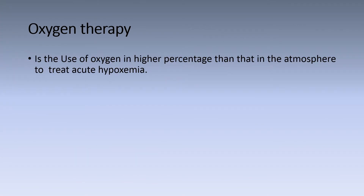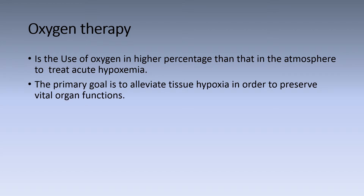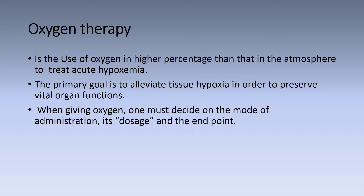Oxygen therapy is the use of oxygen in a higher percentage than that in the atmosphere to treat acute hypoxemia. The primary goal is to elevate tissue hypoxia in order to preserve vital organ functions. When giving oxygen, one must decide on the mode of administration, its dosage, and endpoint.